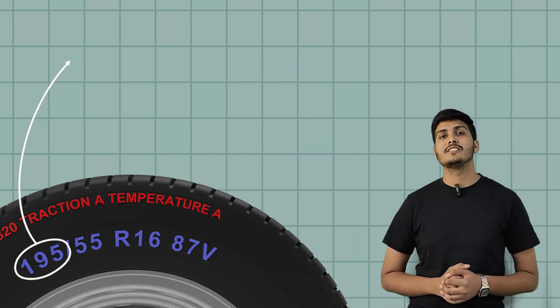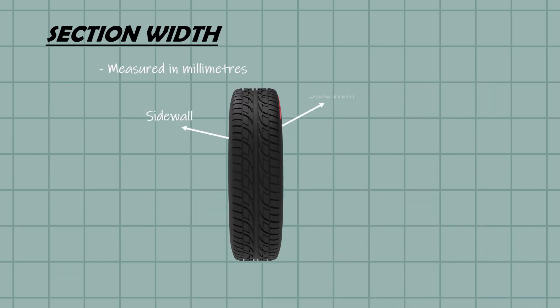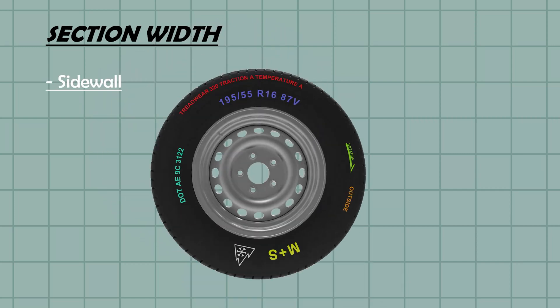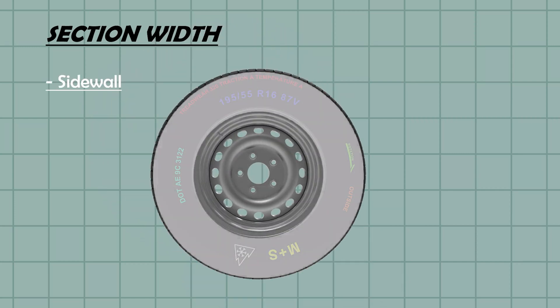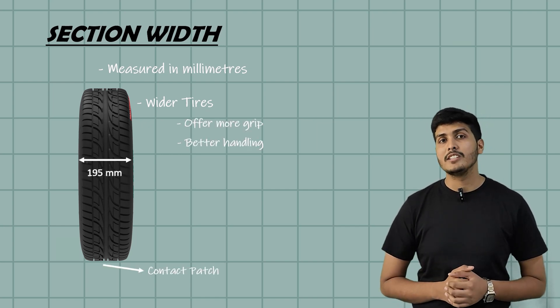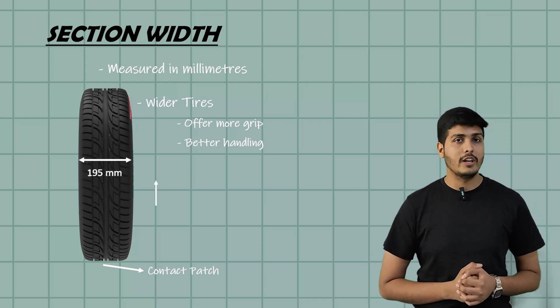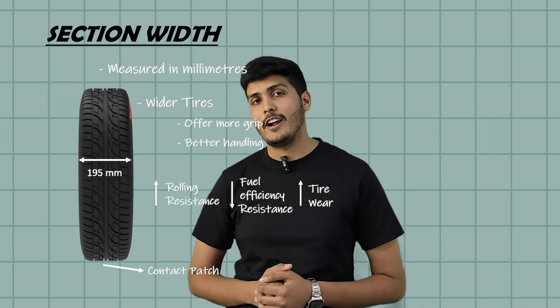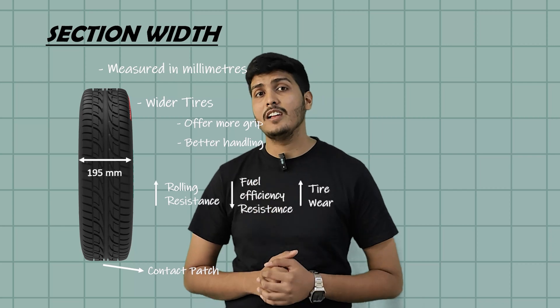First, 195. This is the section width of the tire in millimeters. It means the tire is 195 mm wide from one sidewall to other when mounted and inflated. I know some of you might not be familiar with what actually sidewall means. So here is the quick explanation. The sidewall is the vertical part of the tire, the area between the tread, the part that touches the road and the rim, the metal wheel. It's where all the markings are printed and it also plays a huge role in absorbing shocks and maintaining the right comfort. Now coming back to the section width. Wider tires offer more grip and better handling especially while cornering because they have a larger contact patch with the road but there's a trade-off. Wider tires create more rolling resistance which can slightly reduce your fuel efficiency and increase tire wear. So in conclusion, don't blindly go with the wider tires unless your vehicle and driving style really demands it.